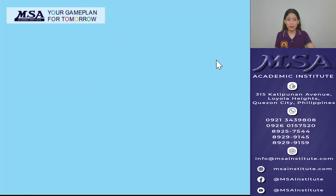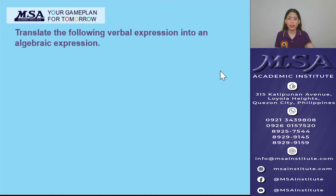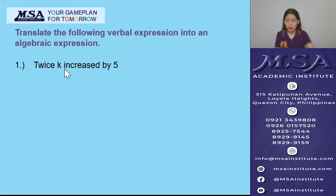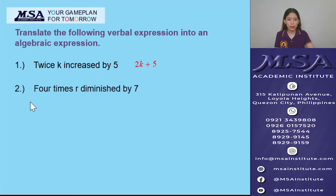Now that we know how to identify mathematical operations, let's have some exercises. Translate the following verbal expressions into algebraic expressions. Number 1: 'Twice k increased by 5.' Twice k means 2k, and increased by 5 means plus 5. So the translation is 2k plus 5. Number 2: '4 times r diminished by 7.' 4 times r is 4r, and diminished by 7 is minus 7. So the translation is 4r minus 7.